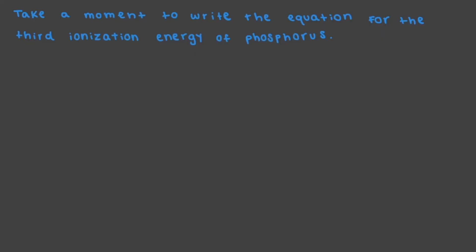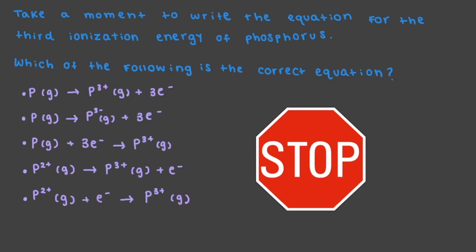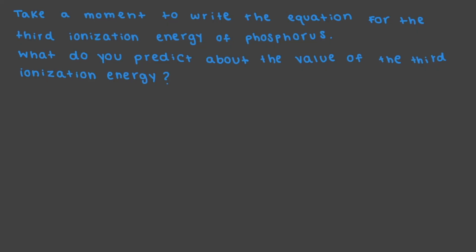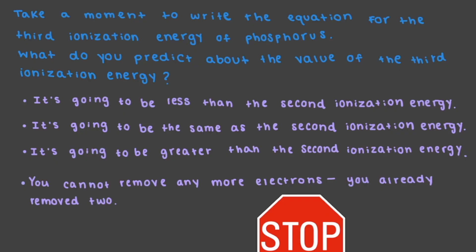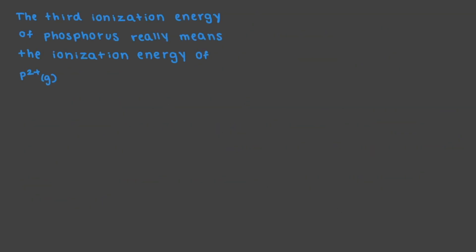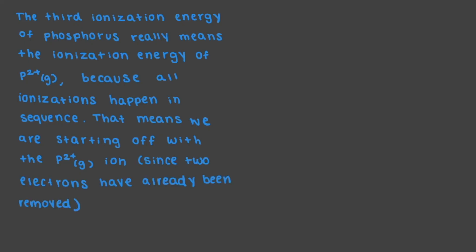Take a moment to write the equation for the third ionization energy of phosphorus. Which of the following is the correct equation? The third ionization energy of phosphorus really means the ionization energy of P2+ because all ionizations happen in sequence. That means we are starting off with the P2+ ion since two electrons have already been removed and one of the products is an electron. That makes the resulting phosphorus ion P3+, which makes this the correct equation.